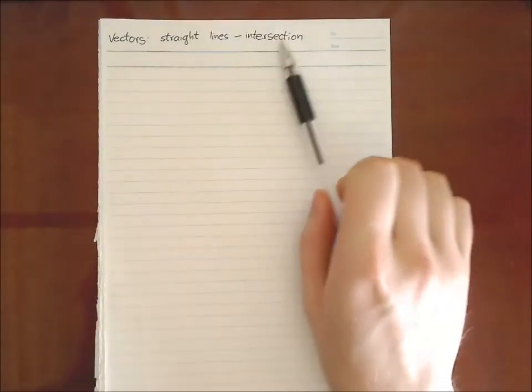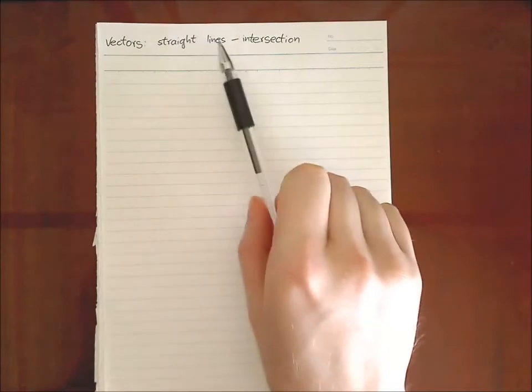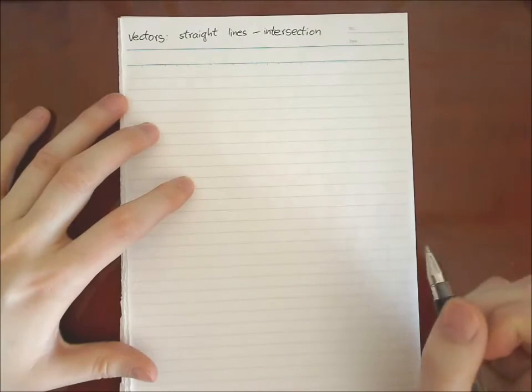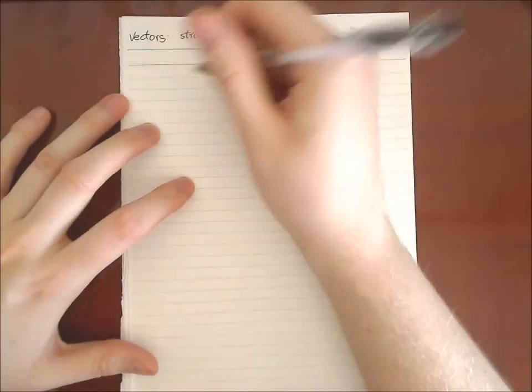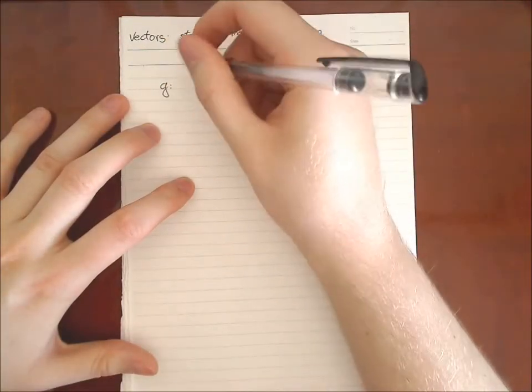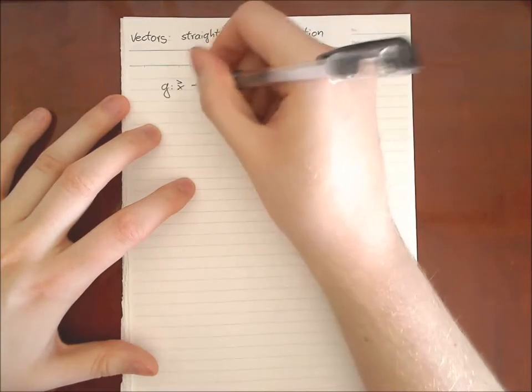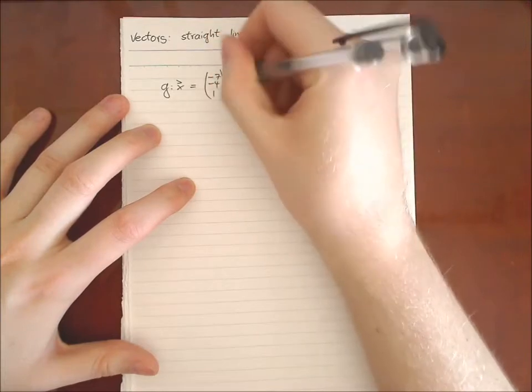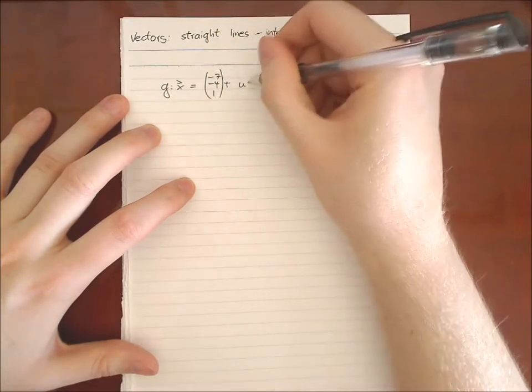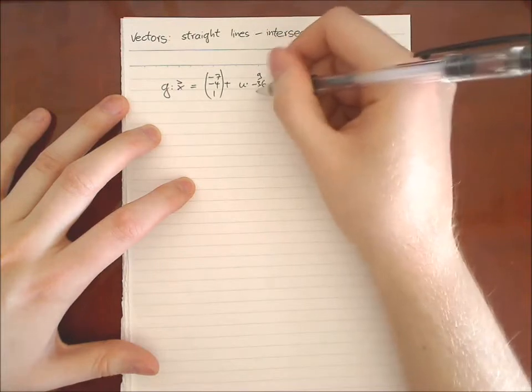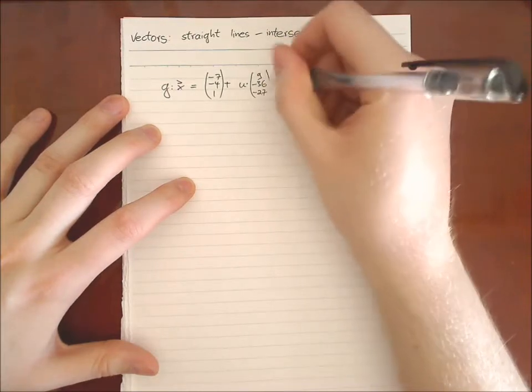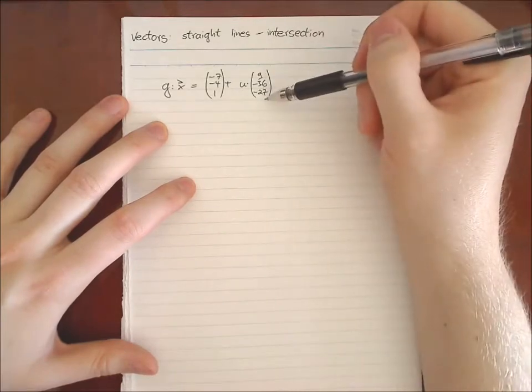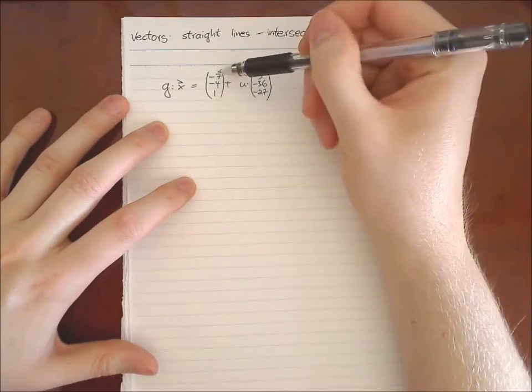How to calculate the intersection between two straight lines? I'm going to show you the principle with an example. So we have given two straight lines, g, which are minus seven, minus four, one, plus u times nine, minus 36, minus 27. And just to remember you, this vector is called the directional vector, this vector is called the support vector.